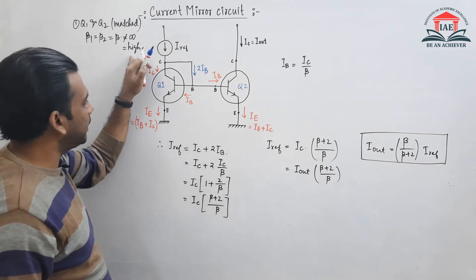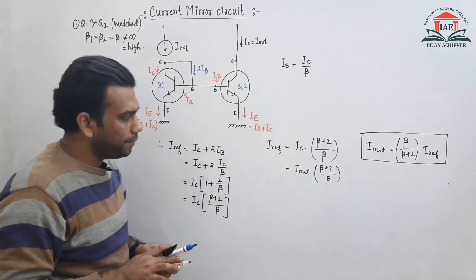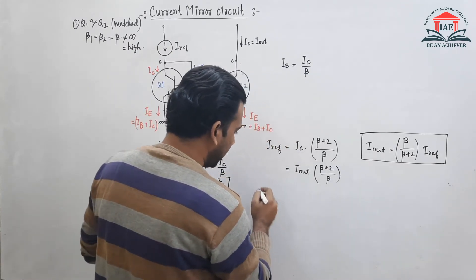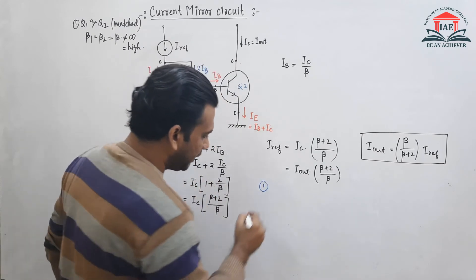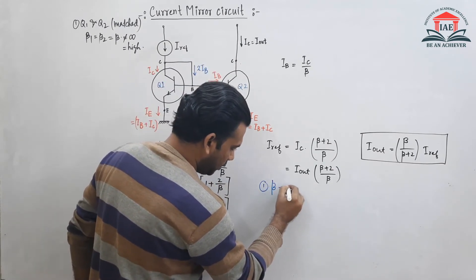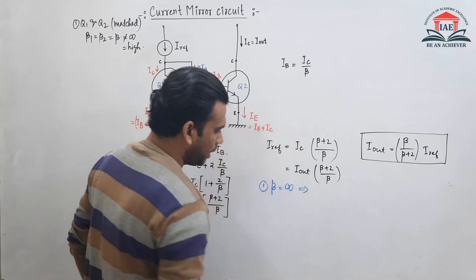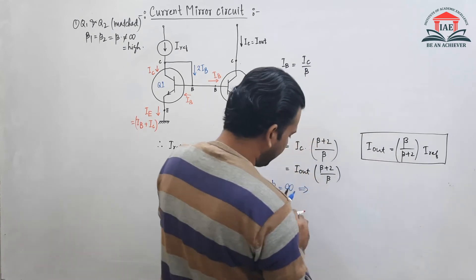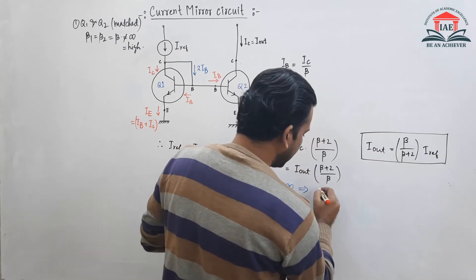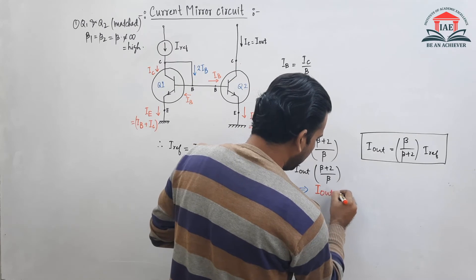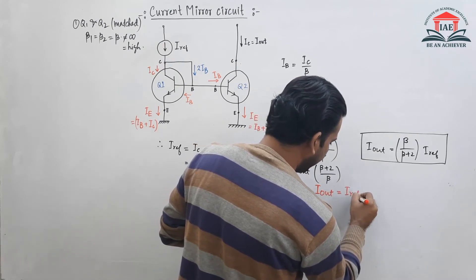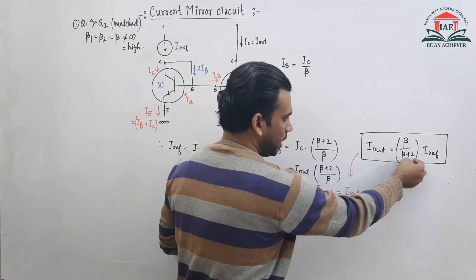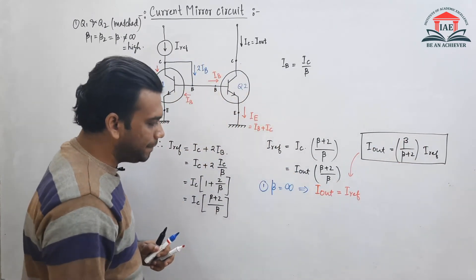Now let us take some cases. Case 1: if beta is infinite, then I_out = (∞ / (∞ + 2)) × I_reference = I_reference. So when beta is infinite, I_out exactly equals I_reference, which confirms our previous assumption.